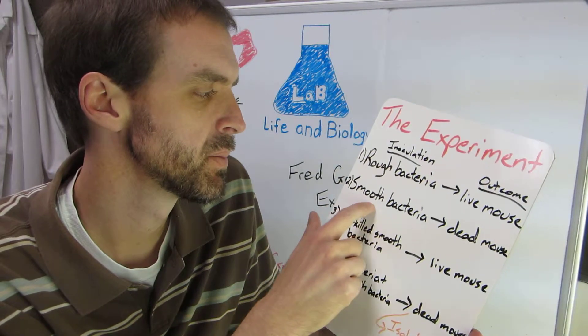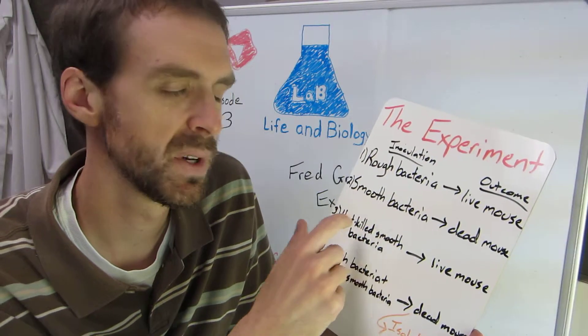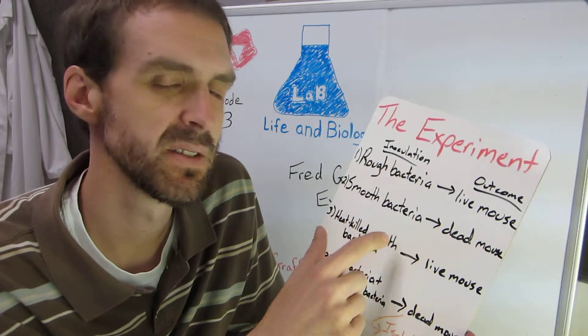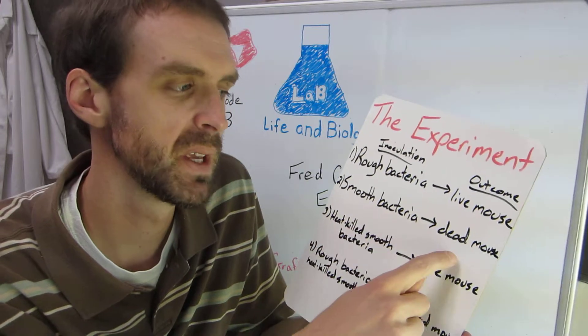However, smooth bacteria have a polysaccharide surface, a sugar coating that protects the bacteria from the immune system. This allows these bacteria to cause more damage and replicate better, and they end up killing the mouse.